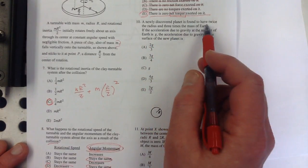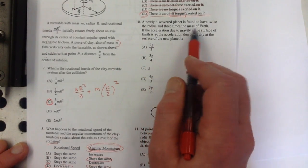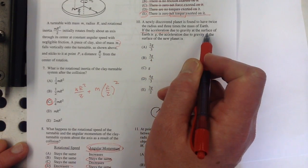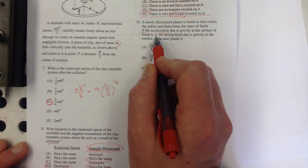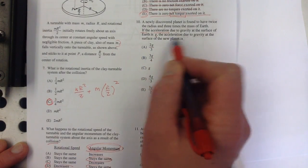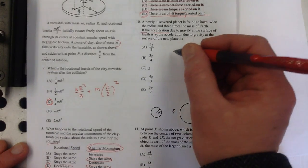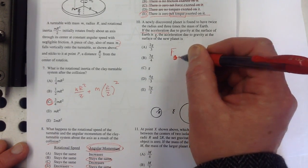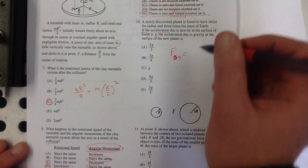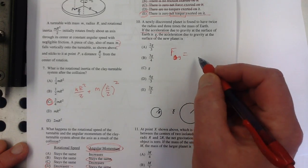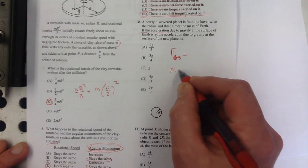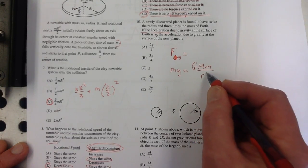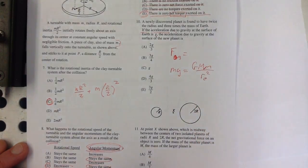A newly discovered planet is found to have twice the radius and three times the mass of the Earth. If the acceleration due to gravity at the surface of the Earth is g, then the acceleration due to gravity at the surface of the new planet is... So remember the force of gravity—if we kind of connect the little mg and big mg, say our mg is equal to gmm over r squared, where r is just the radius of the Earth and m is the mass of the Earth.